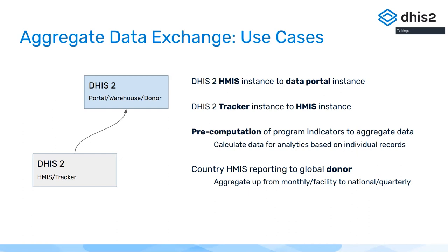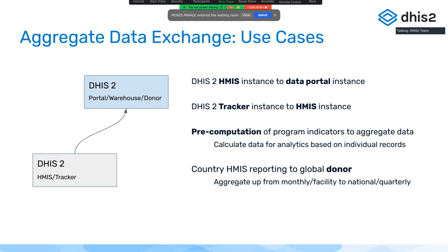The second use case is moving data from a DHIS2 Tracker instance to an HMS instance. In many cases we recommend a separate DHIS2 instance when dealing with confidential and sensitive individual data. But at the end of the day, you often want to move at least the summary or aggregate of those data over to the HMS so you can use them in dashboards, combining different data sources. We can set this up by configuring program indicators on the source side and moving results over to aggregate numbers in the HMS instance. The third use case is pre-computation of program indicators to aggregate data.